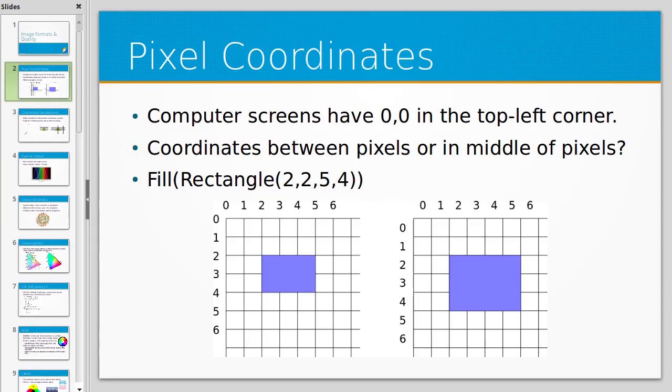One of the first things to discuss is pixel coordinates. Choosing the right coordinate system or knowing what coordinate system is being used within an image package is very important. In this example, we have a fill operation on a rectangle with given coordinates, and what those coordinates mean could be vastly different depending on what library you're using.